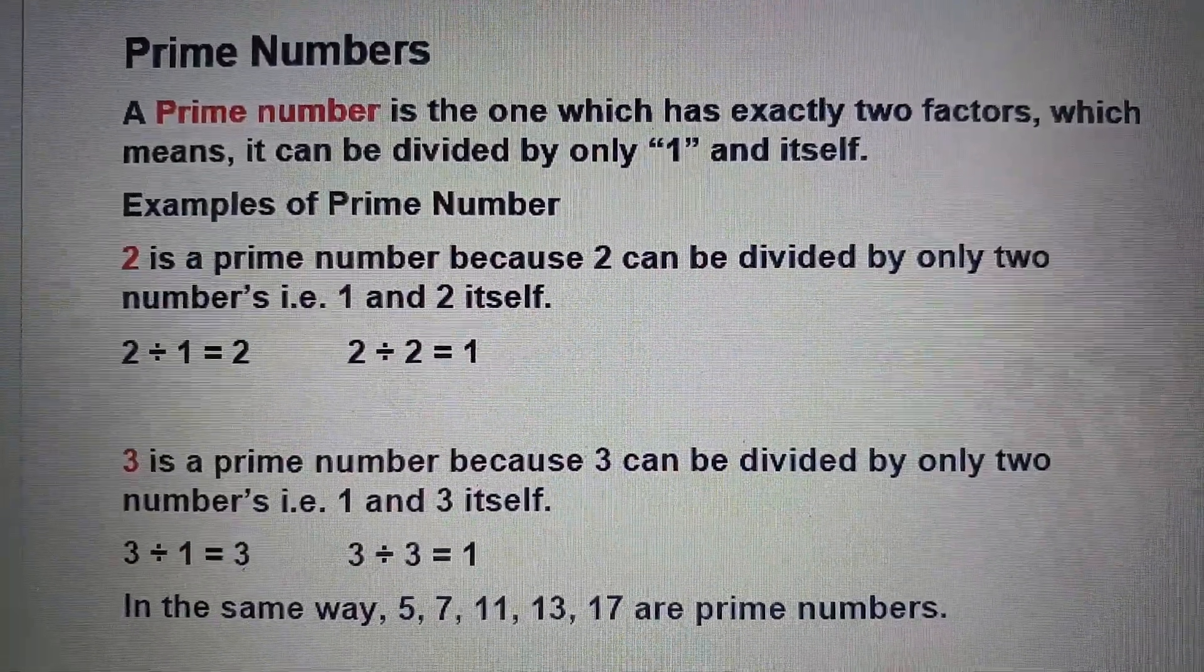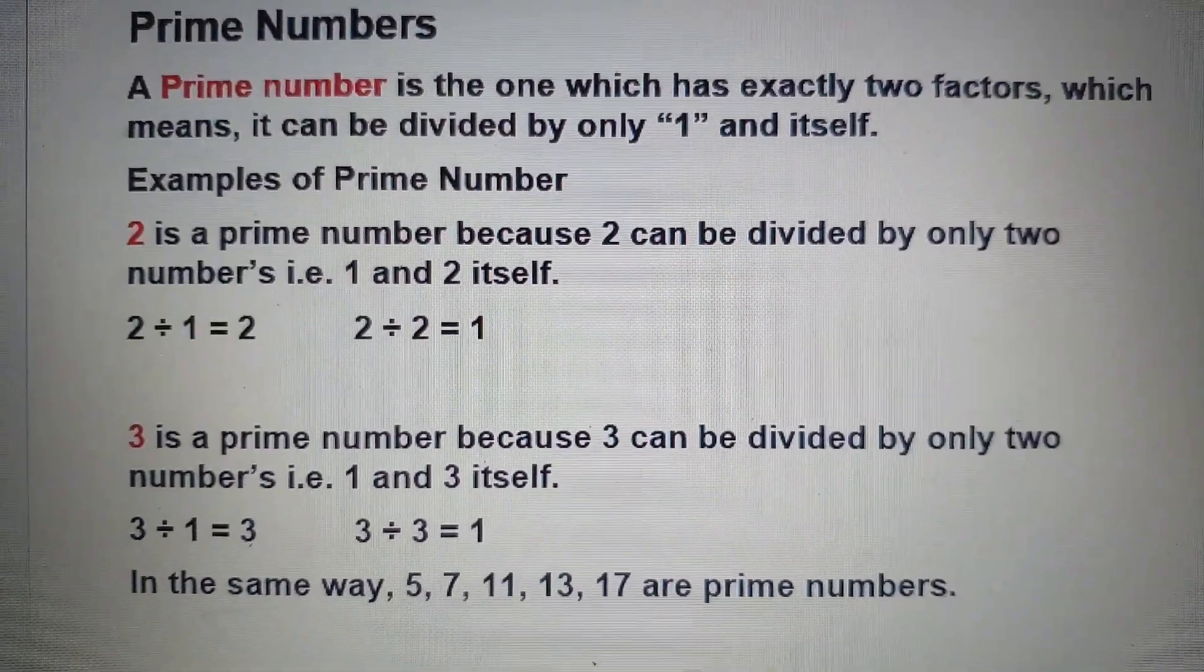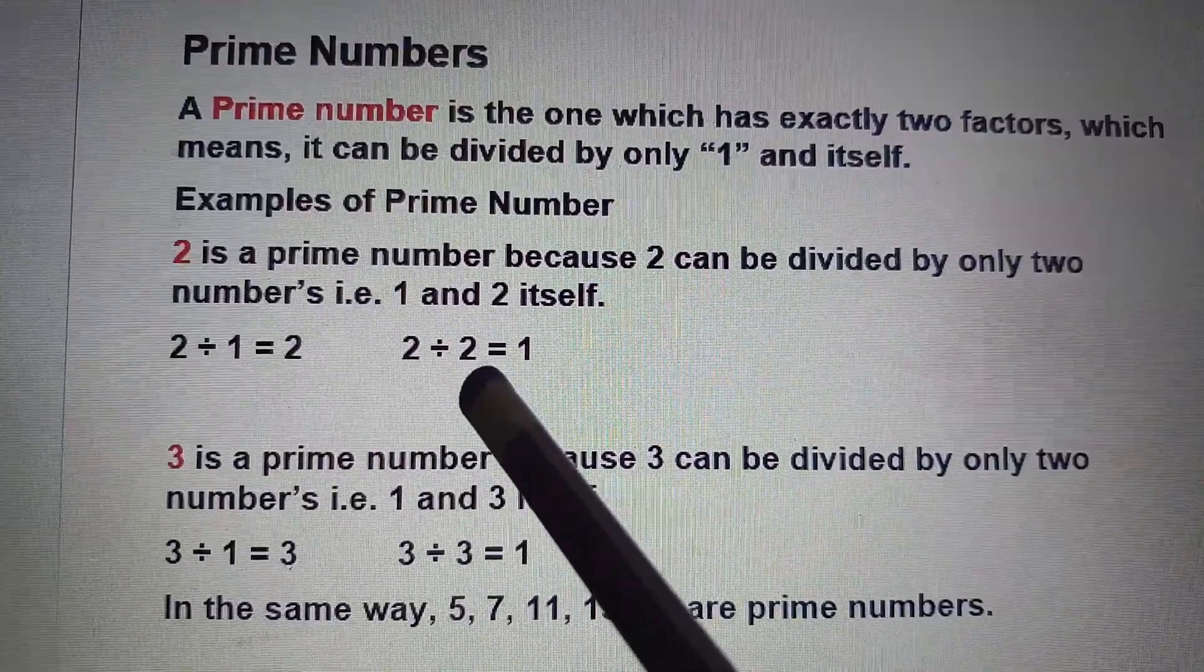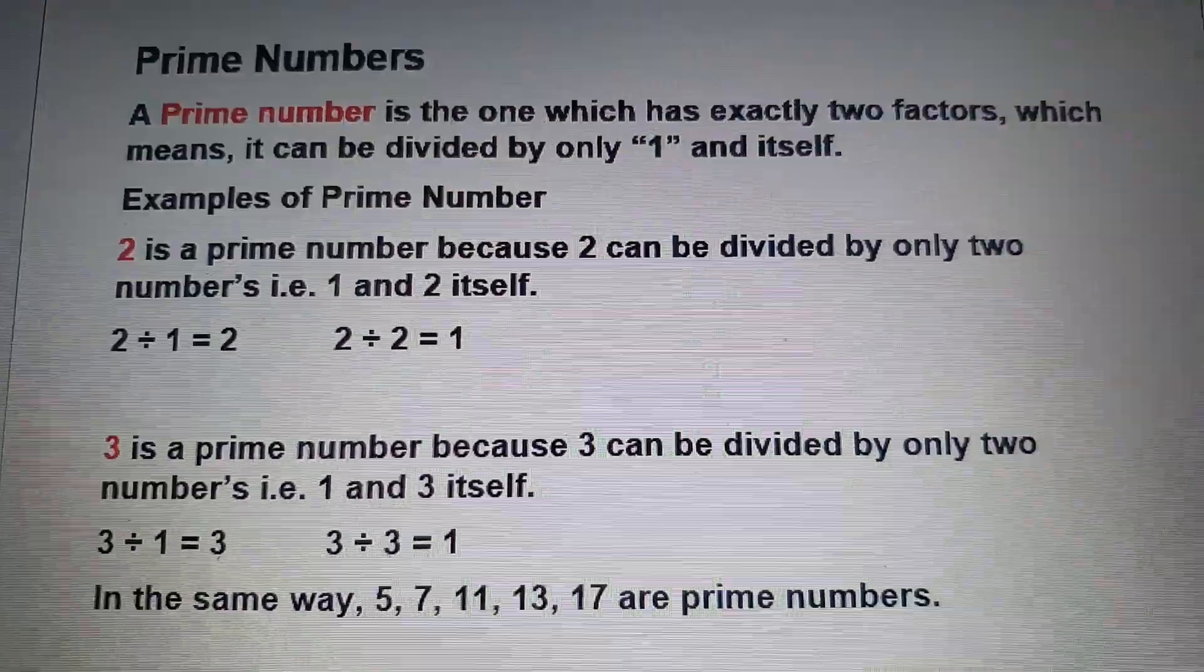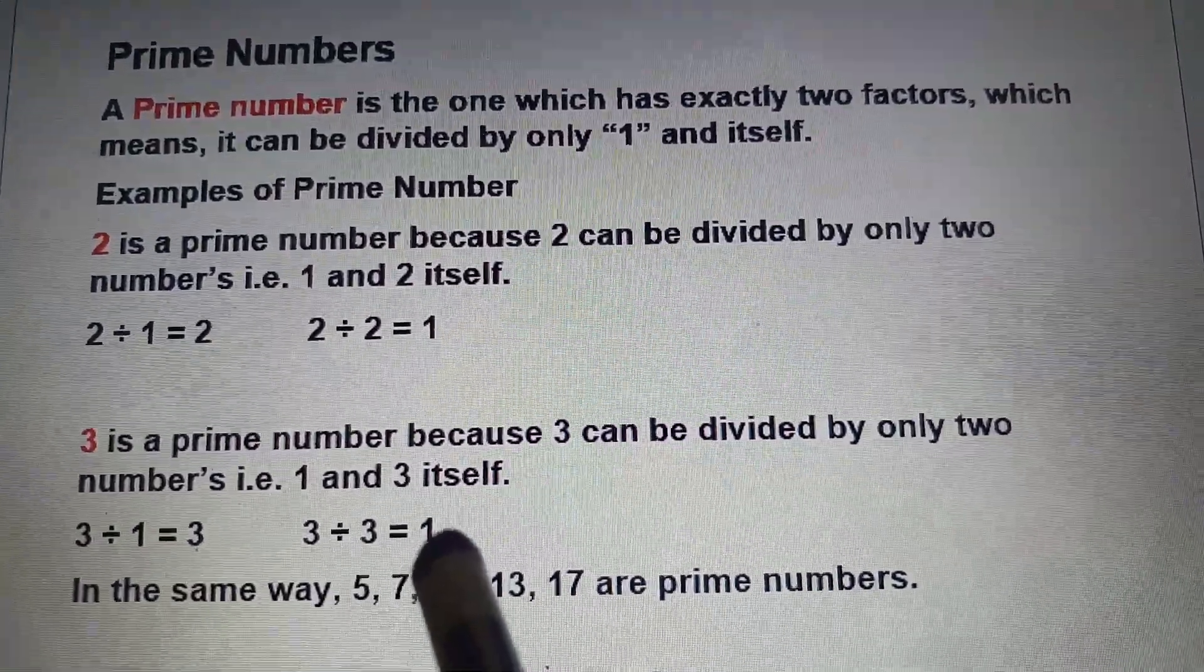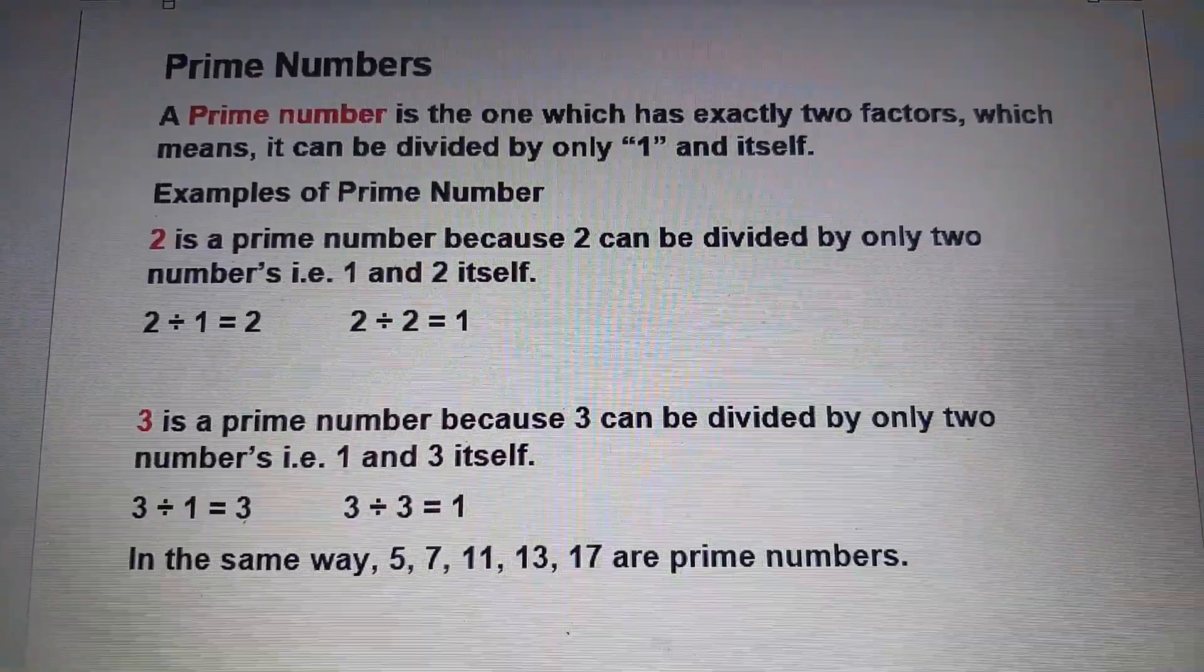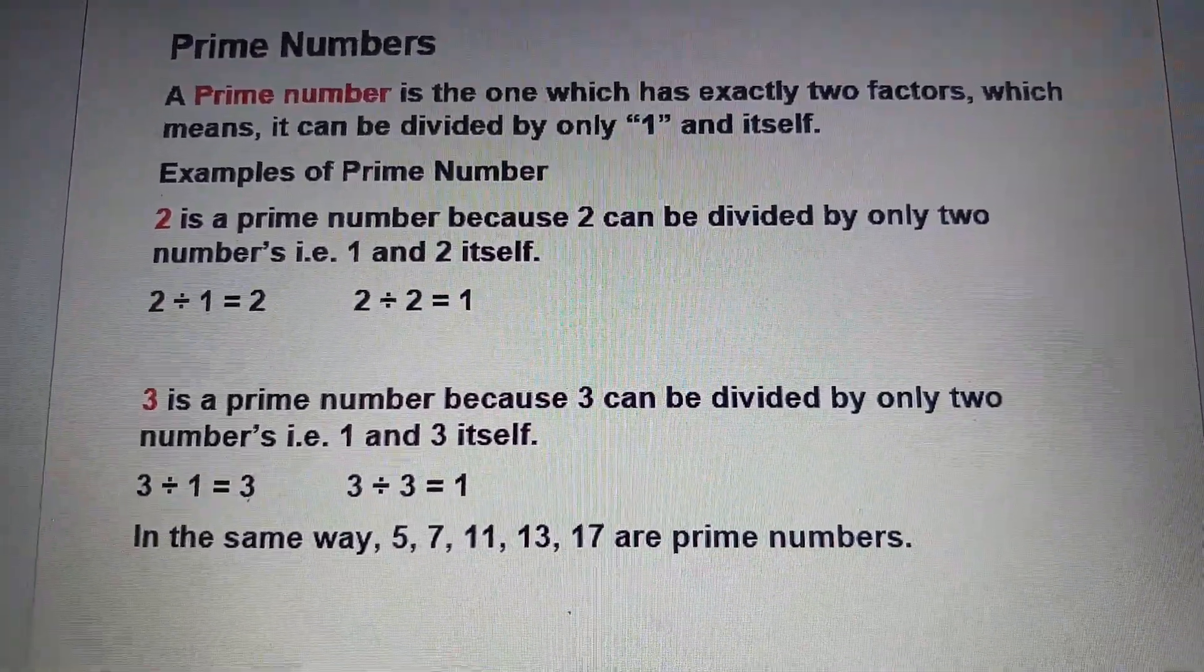Exactly two factors means which can be divided by 1 and the number itself. Here we see that 2 is divided by 1 and the number itself, so 2 is a prime number. 3 is also divisible by 1 and the number itself, so 3 is a prime number. Therefore the numbers which can be divided by only two numbers are called prime numbers.